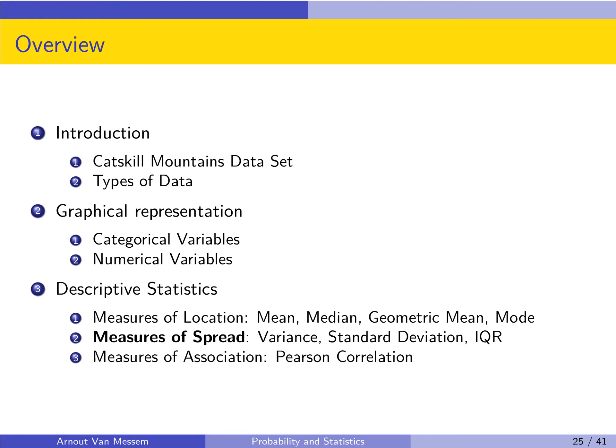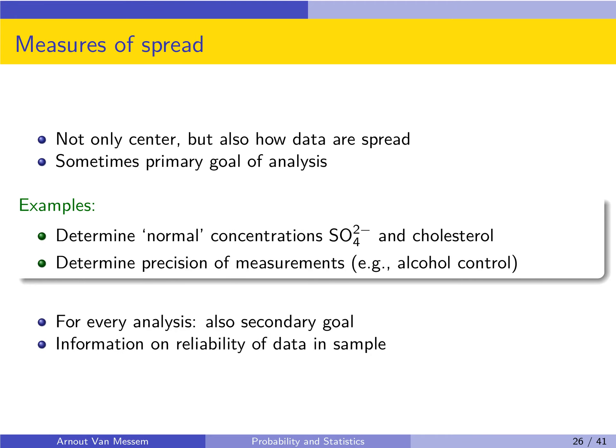The second measure is the measure of spread. Not only the center of the distribution is important, but it is also important to know how the data are spread around this center. So how are the data varying around the center?